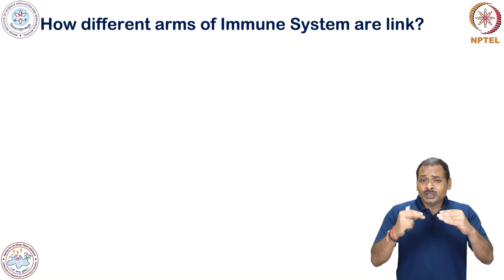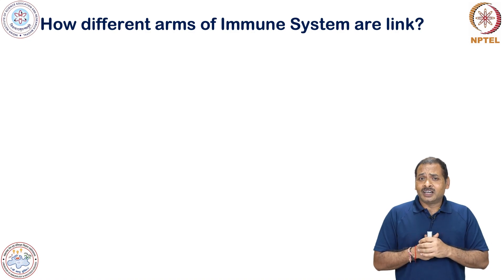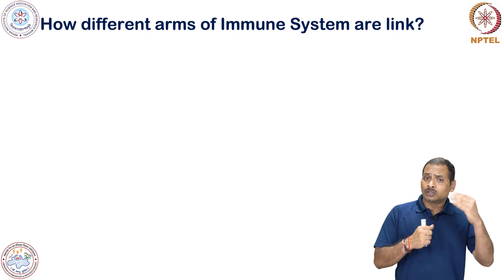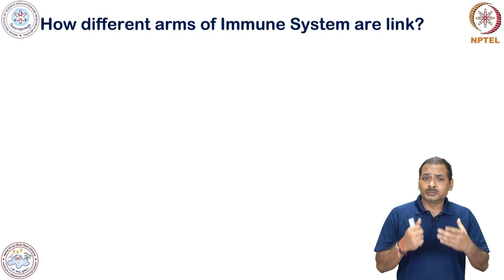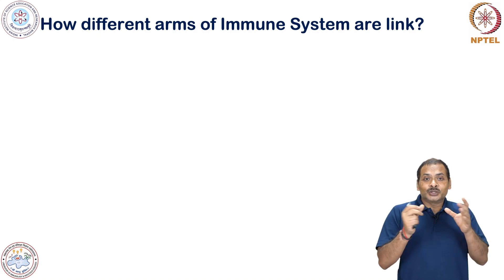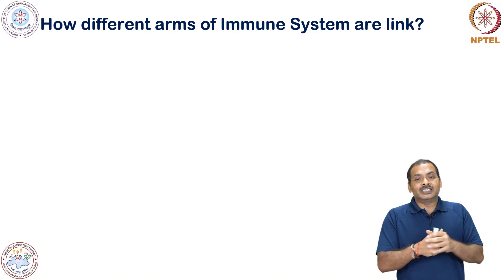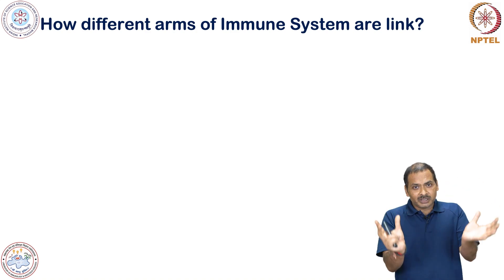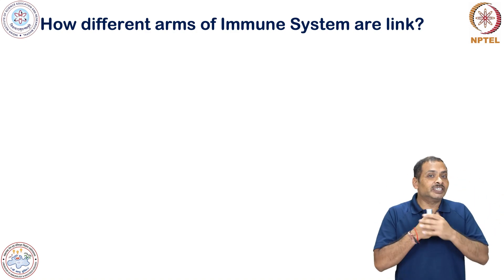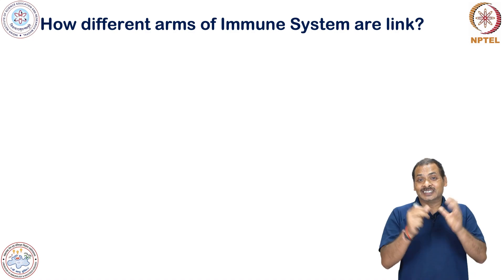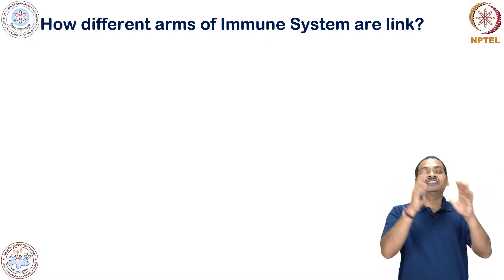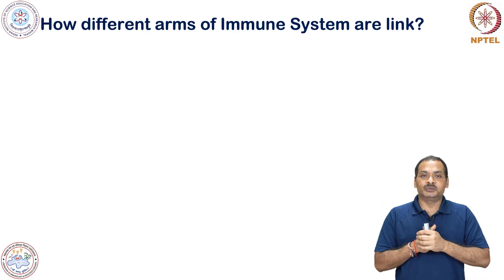These complement-mediated responses are also mediated by antibodies. So you can see that this complement family of proteins and complement-mediated immune response acts as a kind of linker between innate as well as adaptive immunity.